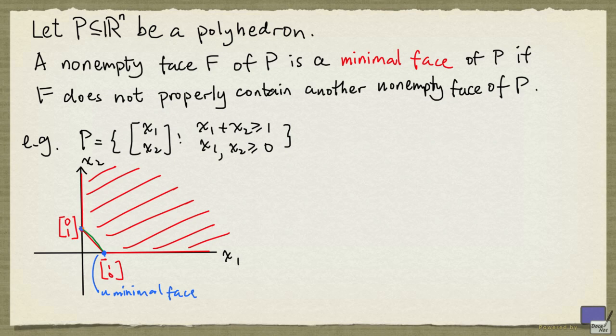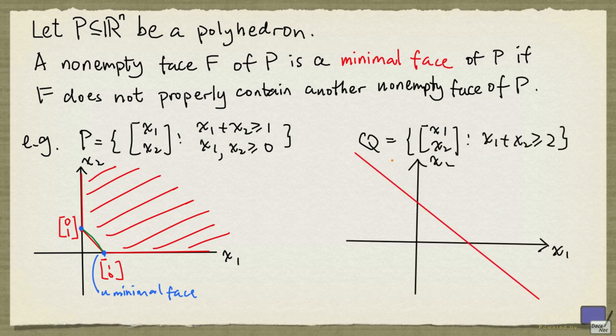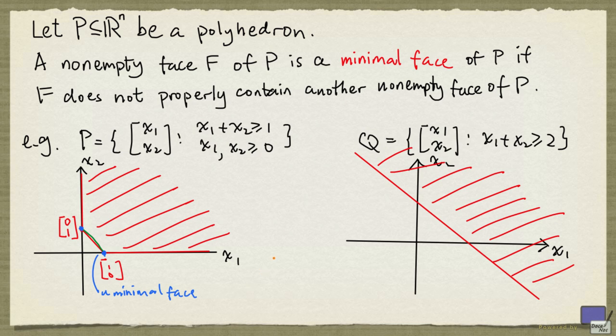And so is this. So for this polyhedron P, there are two minimal faces. Now suppose that the polyhedron is given by this. And here is a sketch of Q. Notice that there's only one minimal face of Q, and that face is this here.